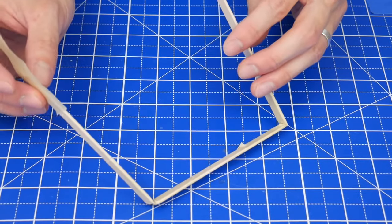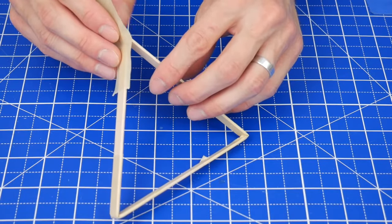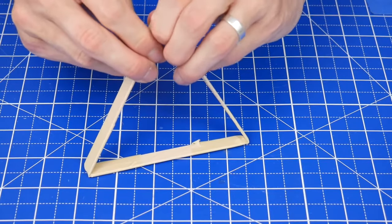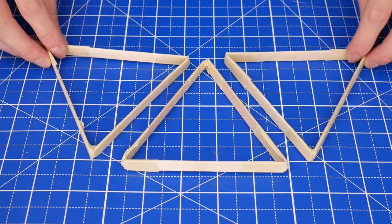Then using the same taping technique, bring the three craft sticks together into a triangle shape, fold that tape over, and then fold the edges around. Then repeat two more times.